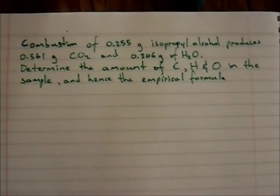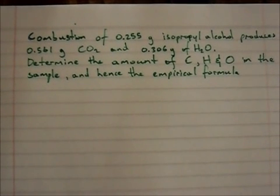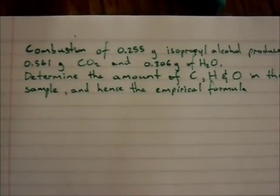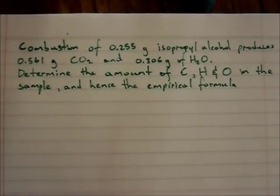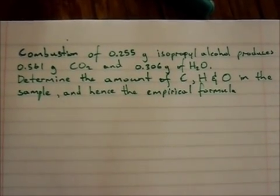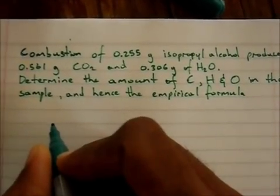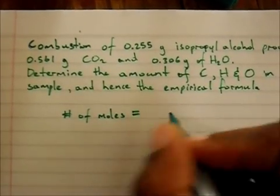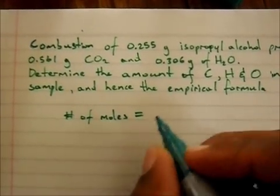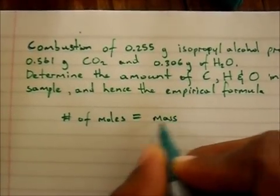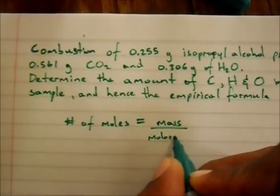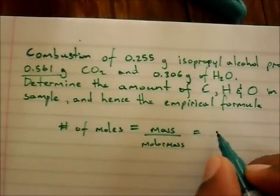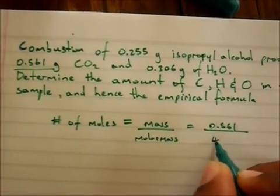In order to find the empirical formula, we need to find the mass of each element, and to do that we need the moles. We will start with carbon dioxide first. We cannot quickly assume the number of moles of carbon in the CO₂, so we first find the moles of CO₂. The number of moles is equal to mass over molar mass.